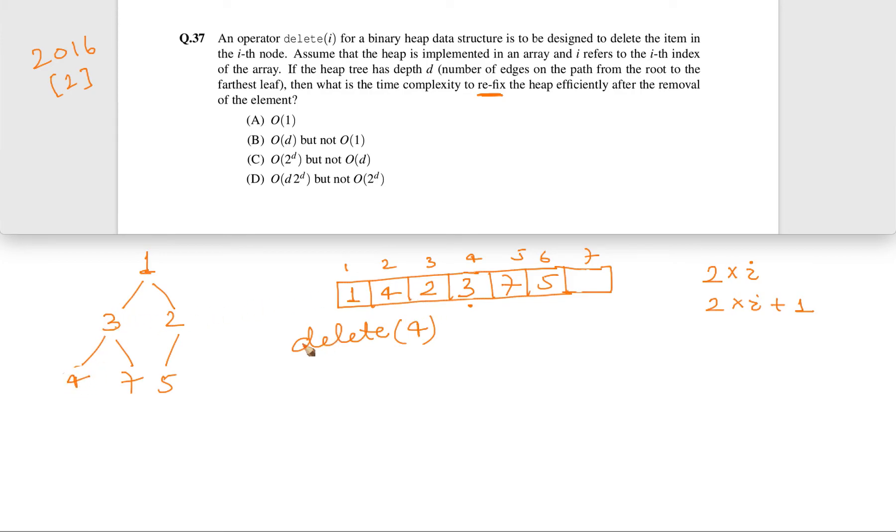And corresponding to that we do swapping here also. Actually, this is just a representation. Actually, the swapping happens here only. So 4 and 3 will be swapped here. So 3 will be here and 4 will be here. So this is the way to do. Now we have to calculate what is the time complexity of whatever we have done just now.